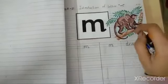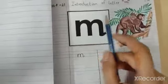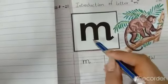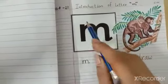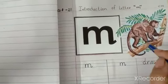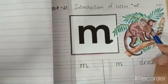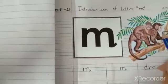Like this, okay students. You can stick or you can write by your own self this big letter M. And you can draw any picture. Like that, I have drawn monkey. Monkey.